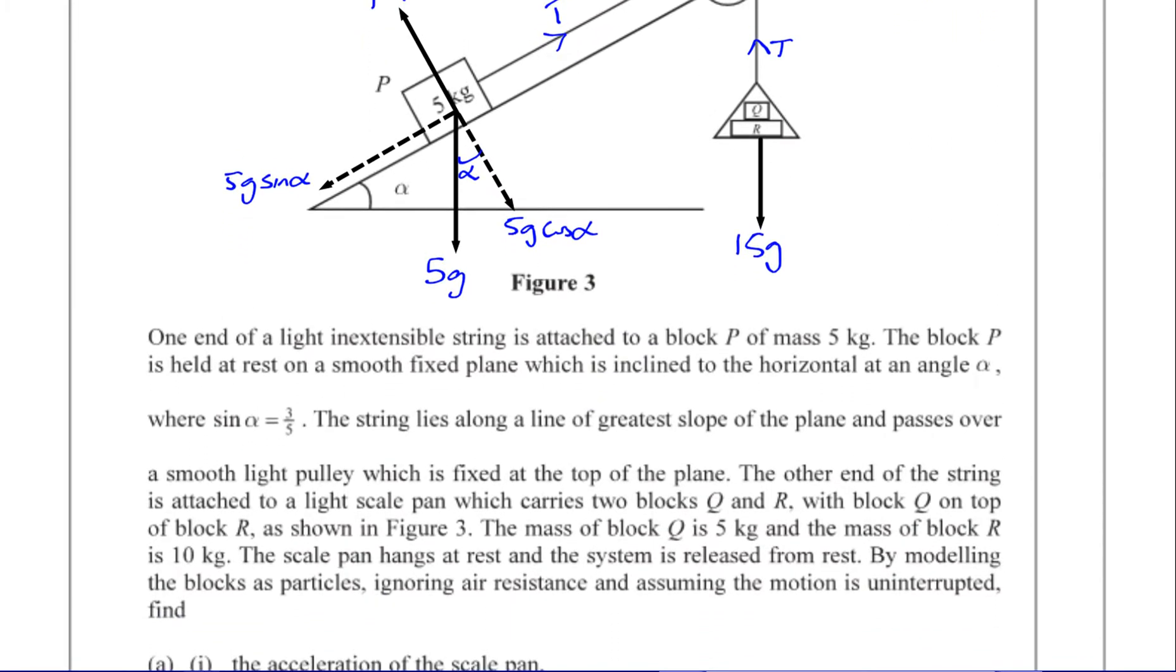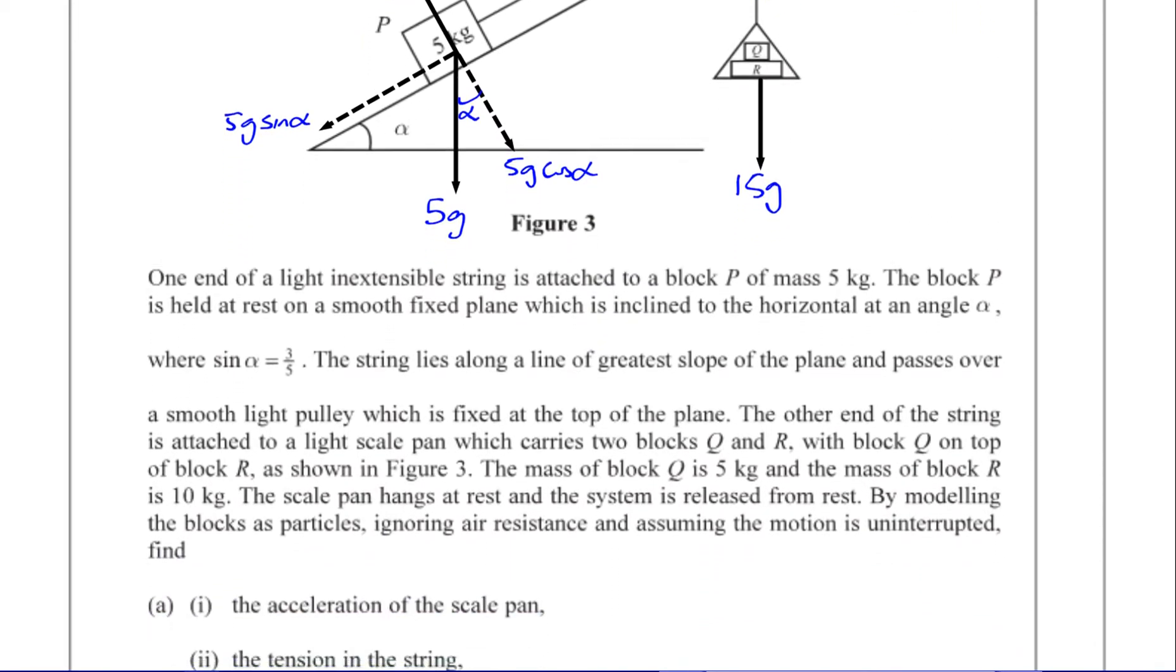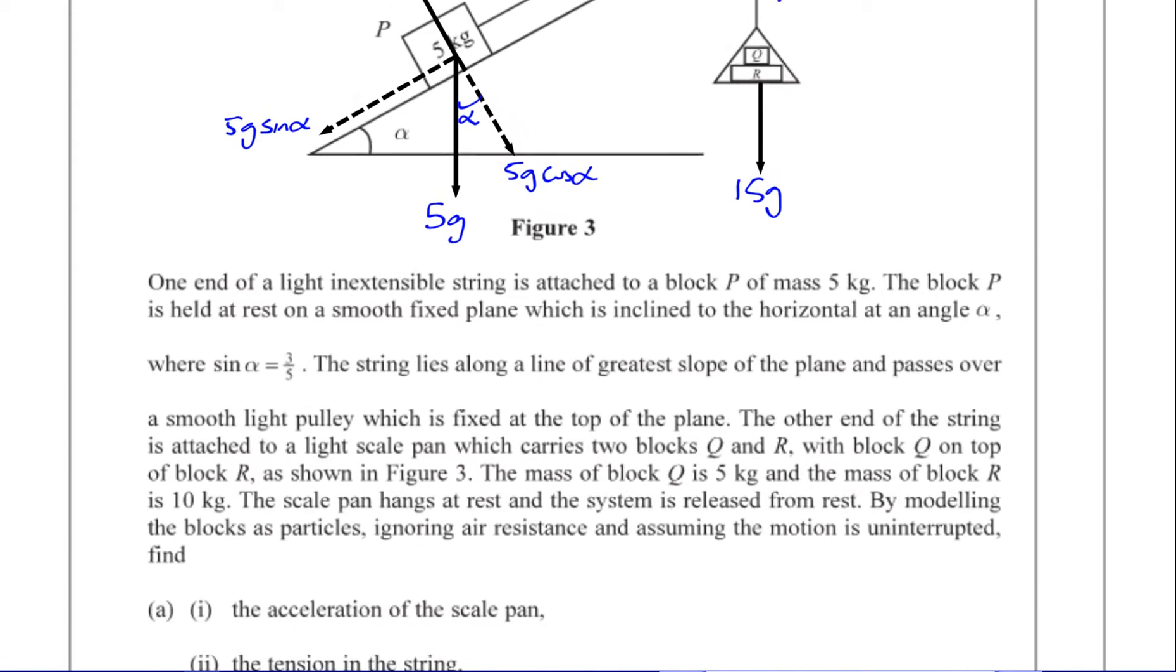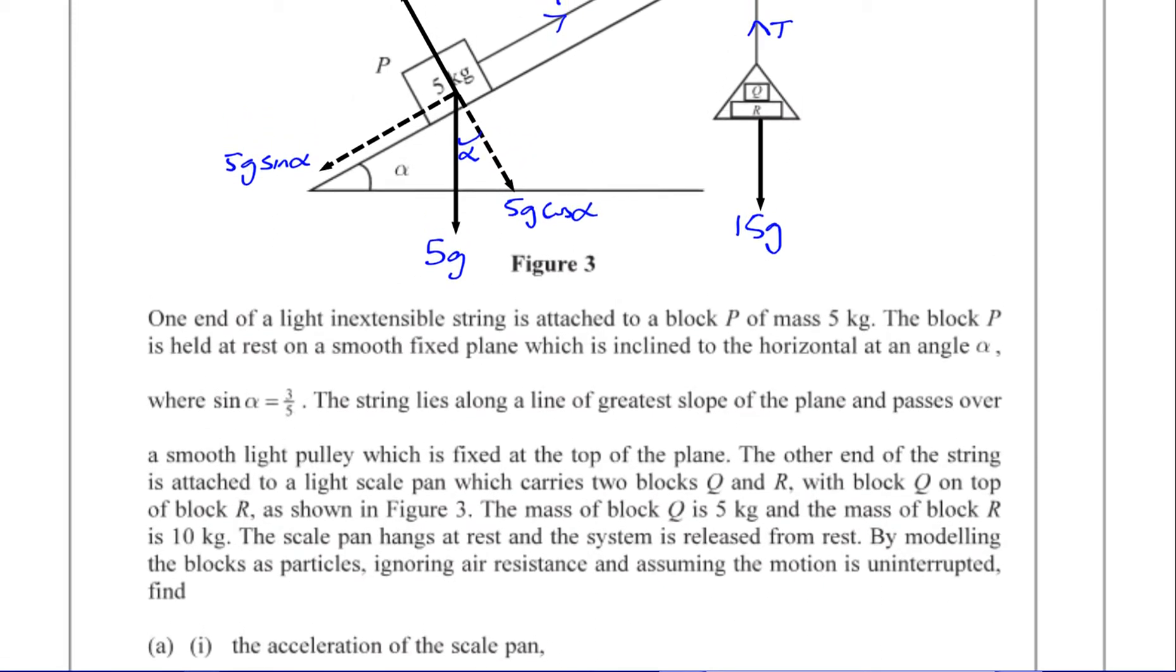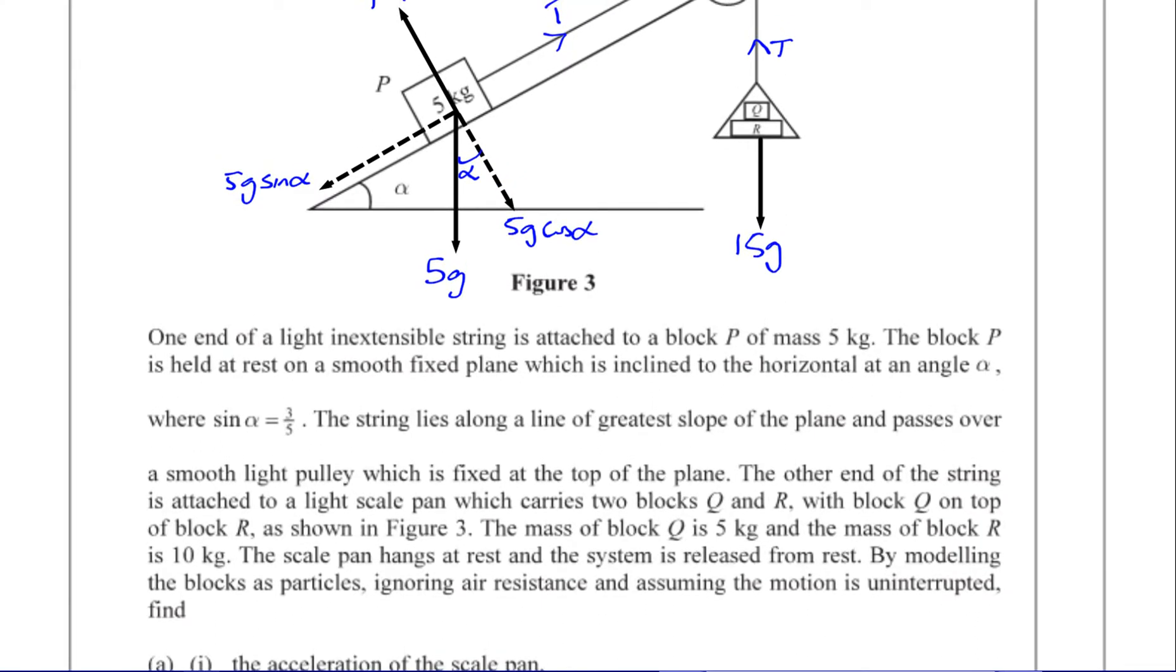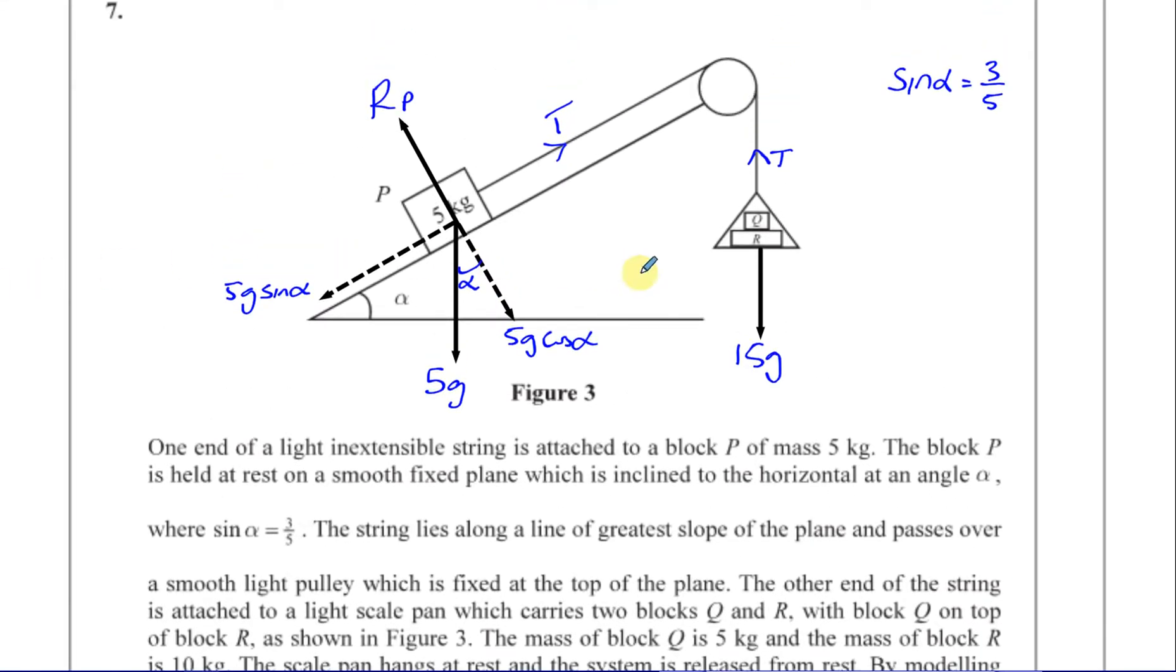So it says the particle hangs at rest and the system is released from rest. When it's released from rest, I'm guessing because this is much heavier over here, this is going to accelerate in this direction here. This will come down.